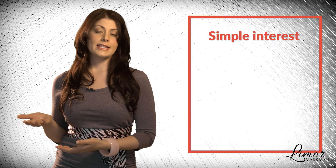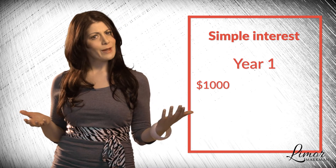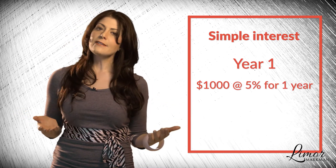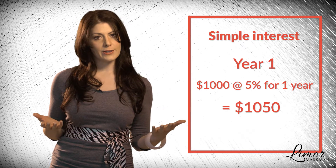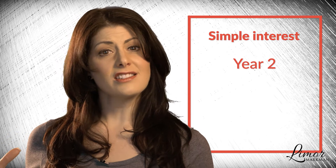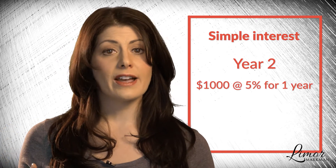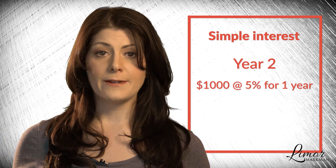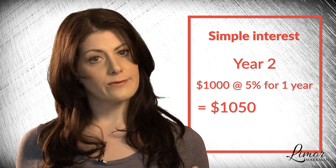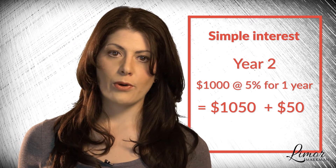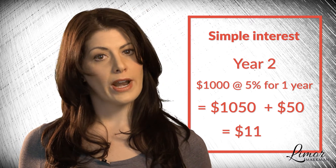Let me explain how the magic of compound interest works in comparison with simple interest. With simple interest, I would take that same $1,000 and, like in my first example, I would invest it at 5% interest for one year. At the end of the year, I would have $1,050. If I were then to take just the $1,000 and reinvest it — not the $50 — at the end of year 2, I would have $1,000 plus $50 in interest plus $50 from the year before.